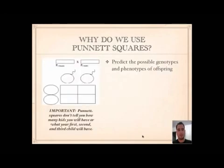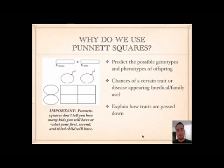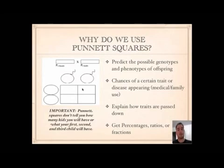Why do we use Punnett squares? We use them to predict the possible genotypes and phenotypes of offspring and the chances of a certain trait or disease appearing, so it's used for medical and family use — to explain how traits are passed down. We get percentages, ratios, or fractions. Remember, Punnett squares don't tell you how many kids you're going to have or which one will have a certain disease. All it gives you is the probability — the likelihood — that a child will be born with something.